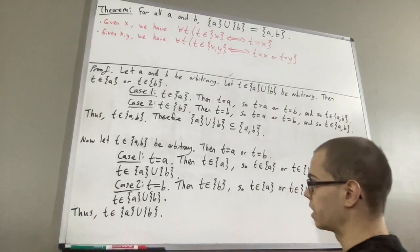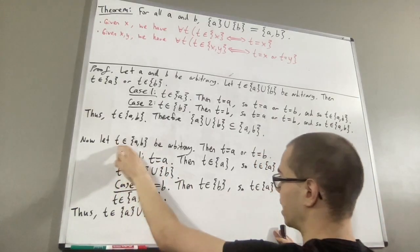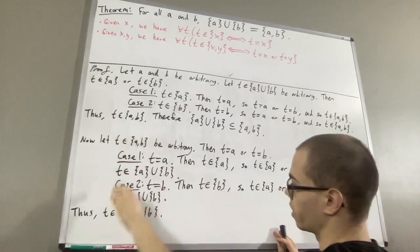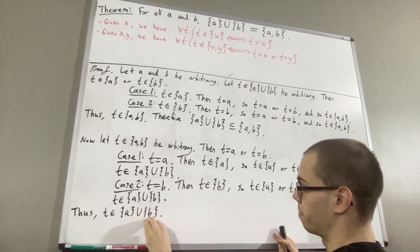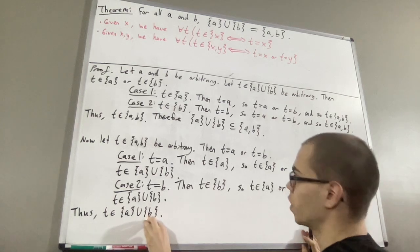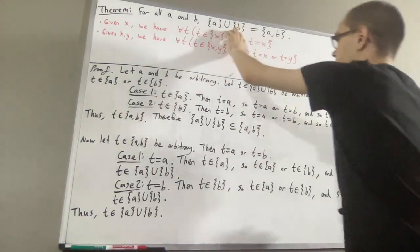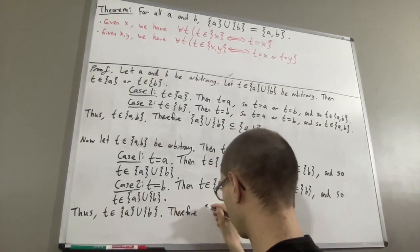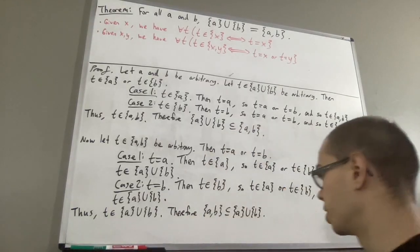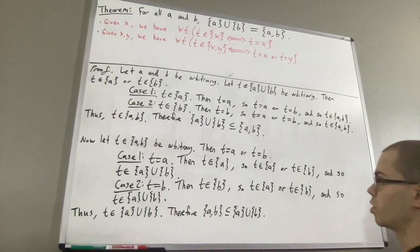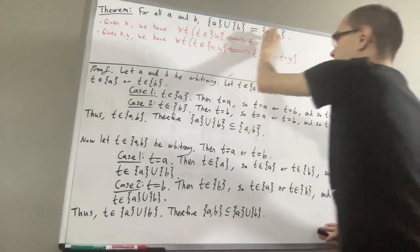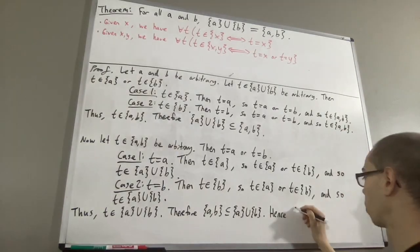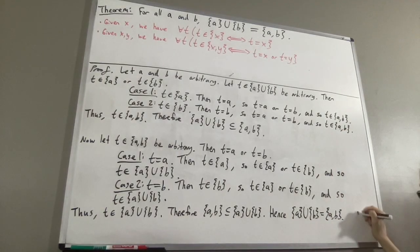Putting this together, we see that given an arbitrary element T in the pairset of A and B, it follows that T is an element of the union of the singleton set of A and the singleton set of B. And that means we have shown that this set is a subset of this set. Because we have shown both of these inclusions, that implies that the two sets are equal. And so, this completes the proof.